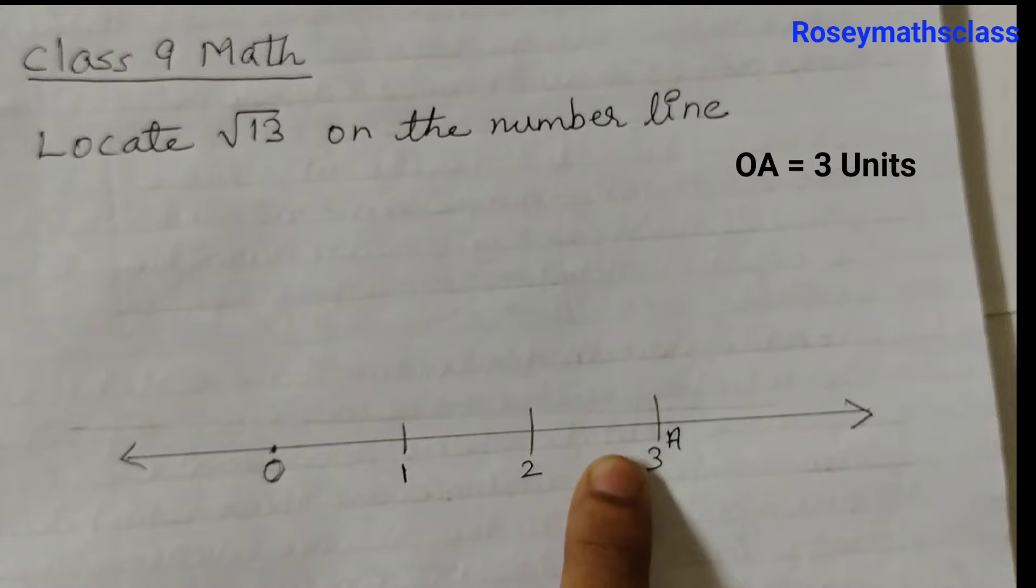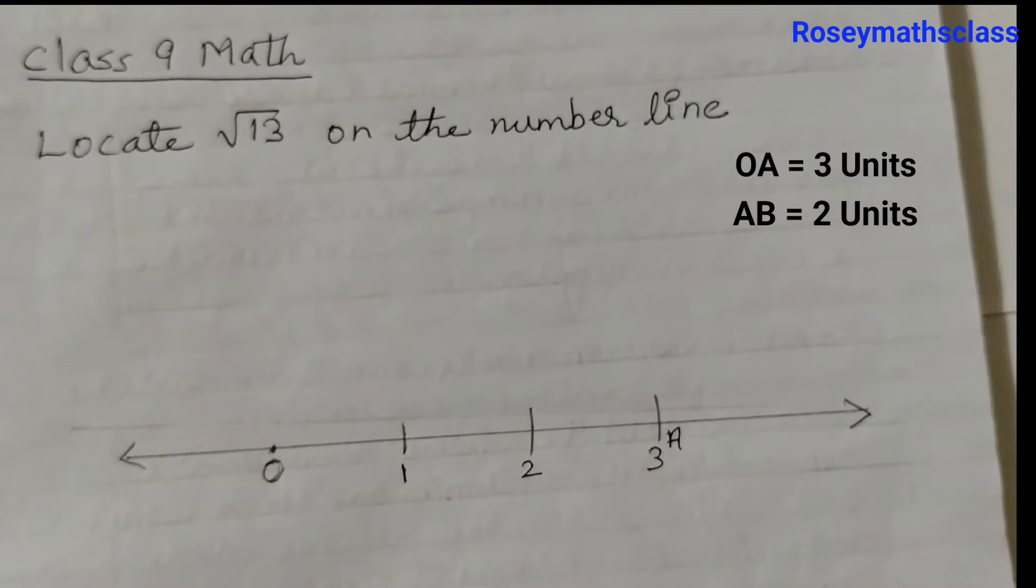At point A, draw a perpendicular BA of 2 units. We will use a protractor to draw a perpendicular.